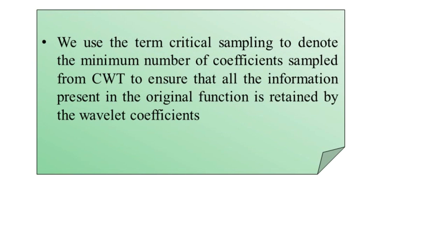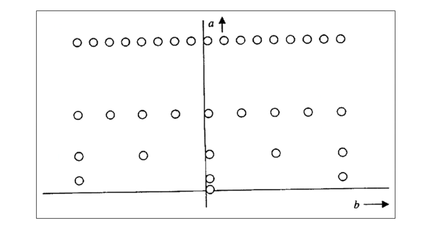Let us visualize an illustration showing the time-frequency scale plane of the wavelet transform. This illustration shows critical sampling of the time-frequency plane by discretizing the CWT parameters: small a equals 2 to the power minus j, and small b equals k times 2 to the power minus j. The two axes show small a on the vertical axis and small b on the horizontal axis. In the continuous wavelet transform, wavelet coefficients are found for every (a, b) combination, whereas in the DWT, coefficients are found only at a few discrete points denoted by dots.